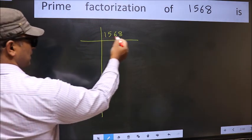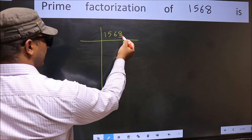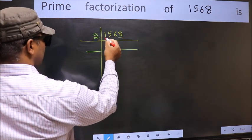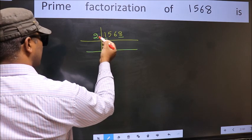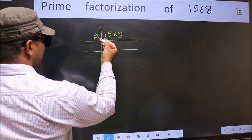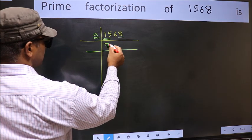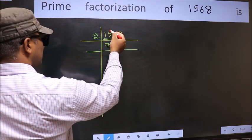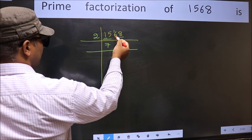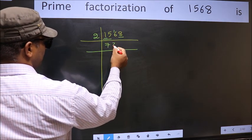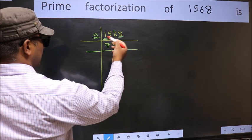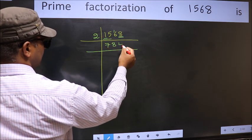In this number, the last digit is 8, which is even, so take 2. The first number 1 is smaller than 2, so take 2 digits: 15. A number close to 15 in the 2 times table is 2×7=14. 15-14=1, carry forward 1, giving 16. When do we get 16 in the 2 table? 2×8=16. The other number is 8. When do we get 8 in the 2 table? 2×4=8.